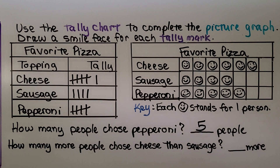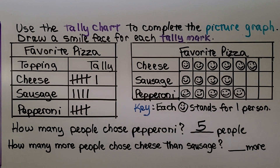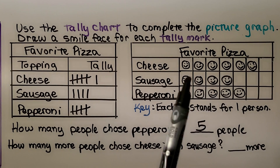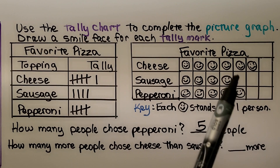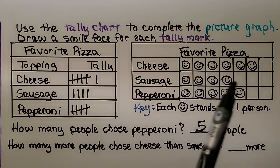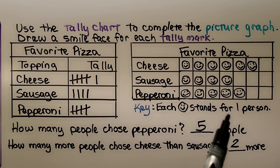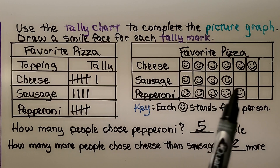We need to compare cheese and sausage. Cheese is six, sausage is four. Looking at the picture graph, we see there are two more smile faces for cheese than sausage. The answer is two more. The picture graph makes it very easy to compare between two of the toppings.